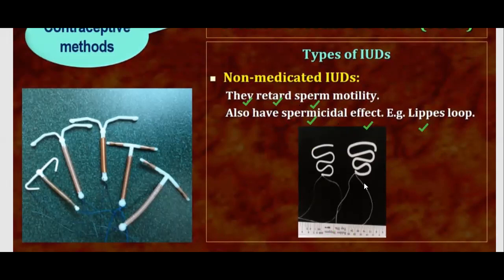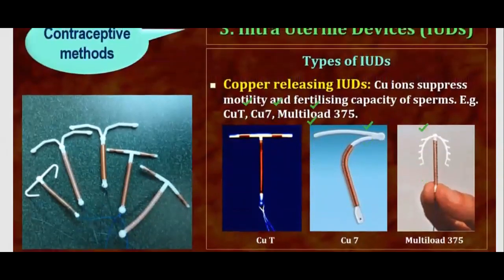The lipase loop is inserted in the uterus. Sperm motility decreases because of the sperm's death — sperm death is enhanced. Copper-releasing IUDs: copper ions suppress the motility and fertilization capacity of the sperm. For example, CUT, CU7, and Multiload 375.